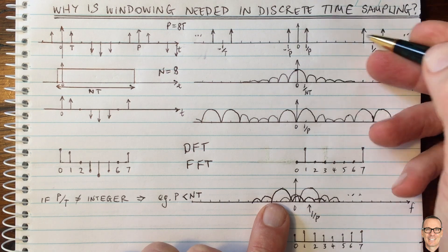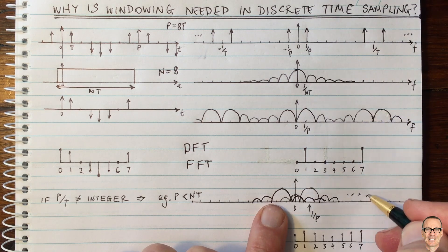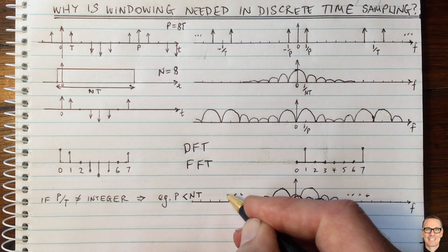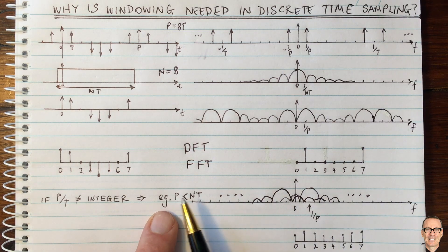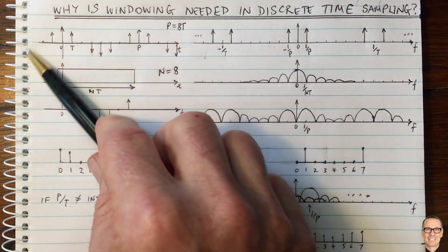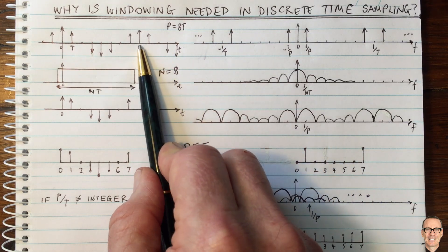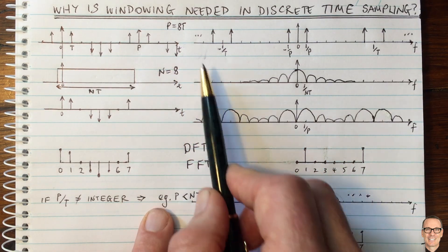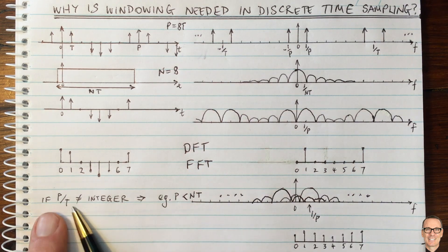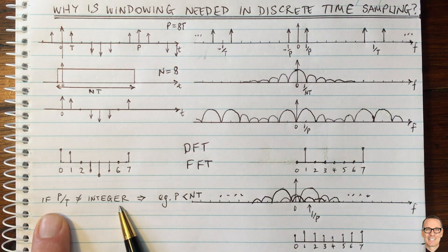The same thing is happening for these ones up here as well and these ones down here. So now all we did was to change the frequency of our waveform slightly. We made P slightly less than the integer relationship. Slightly less so that P on T was no longer an integer.